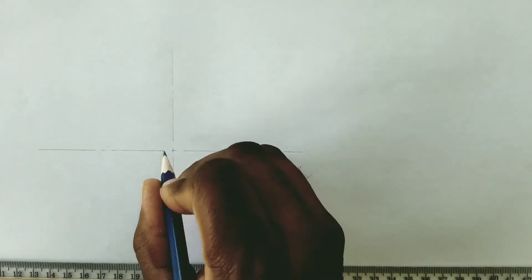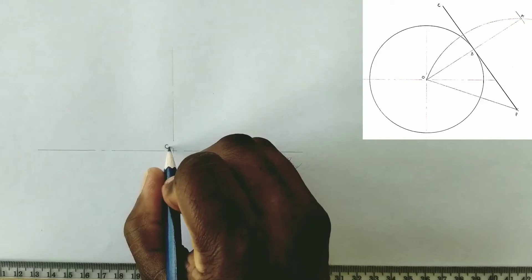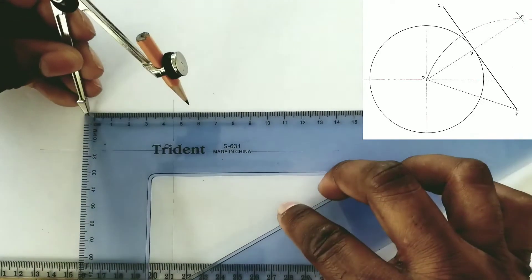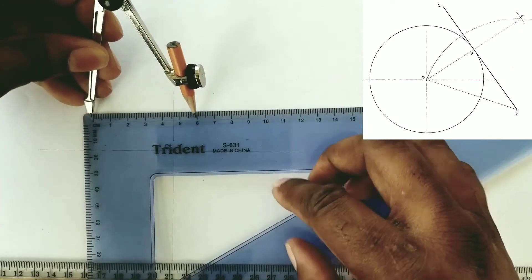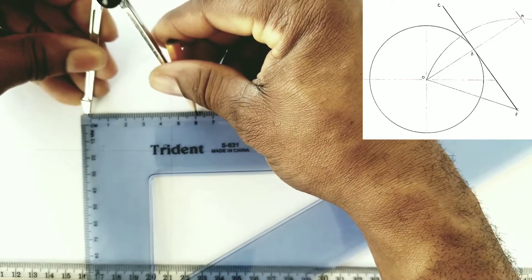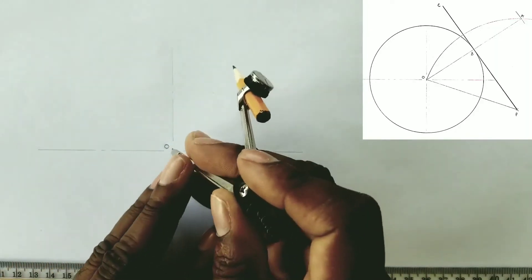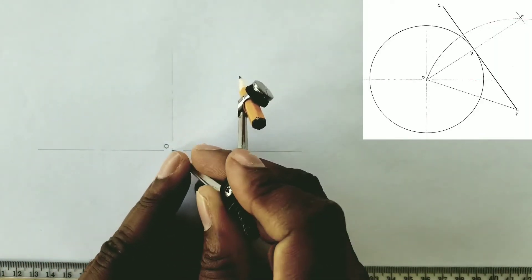The intersection of the center lines will be labeled O. We will now open our compass to a radius of 60 millimeters or 6 centimeters and from point O, we will draw a circle.